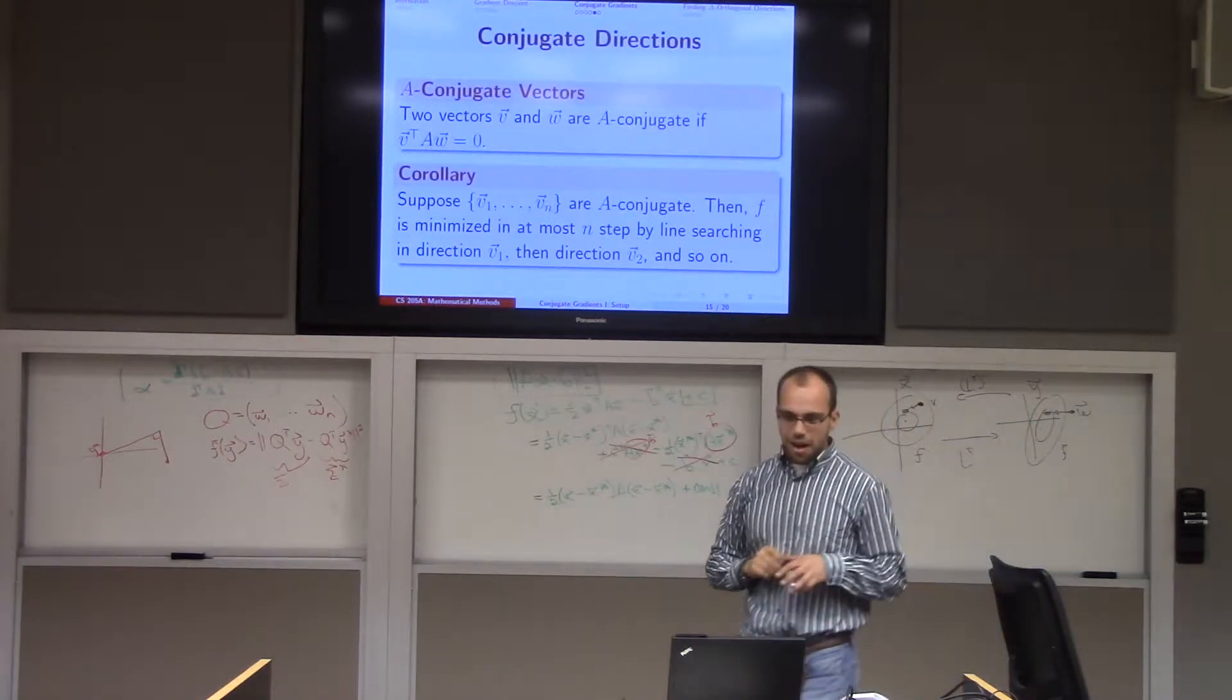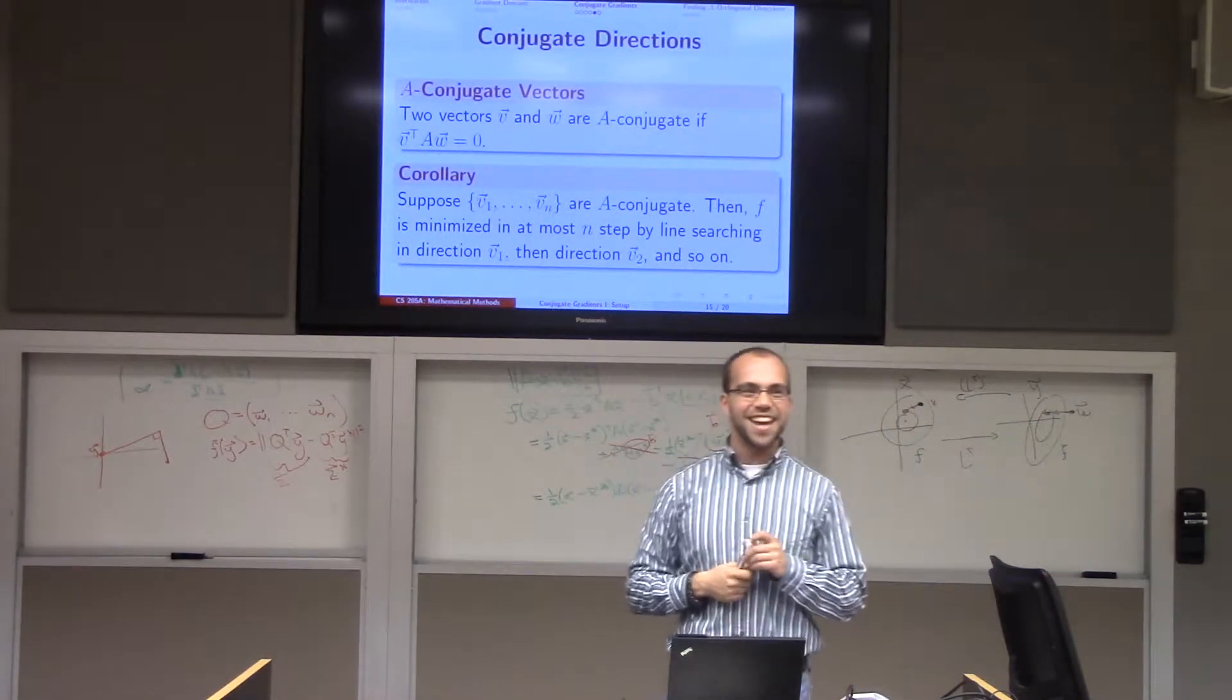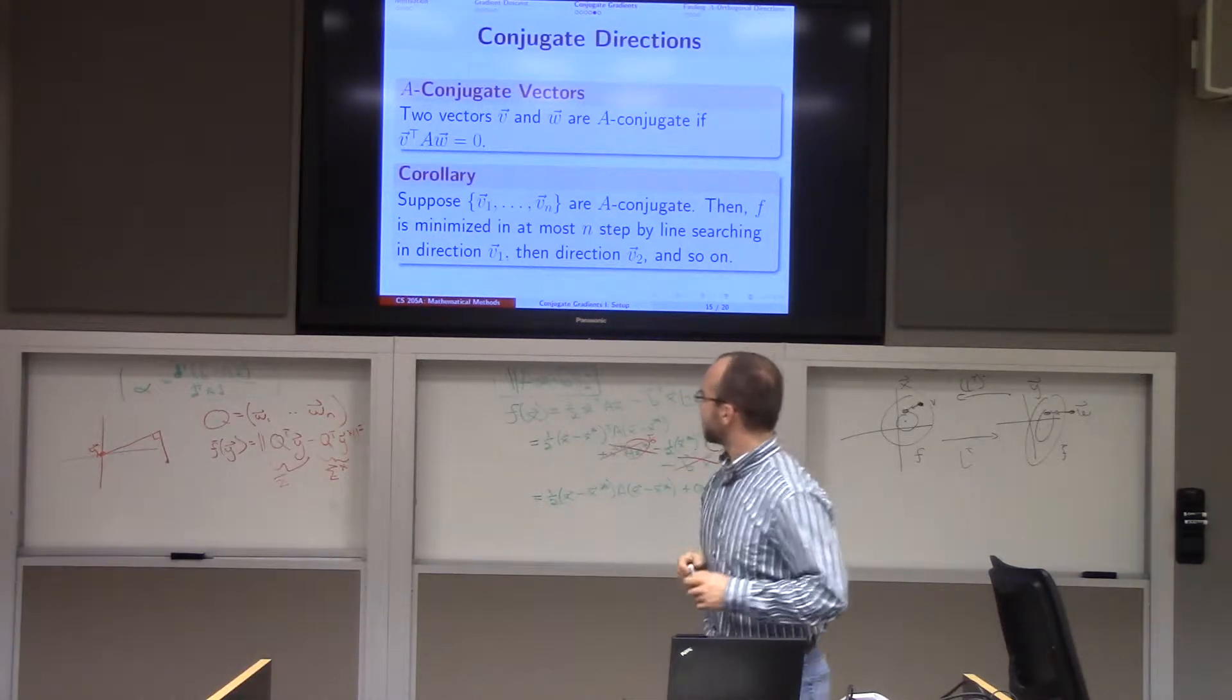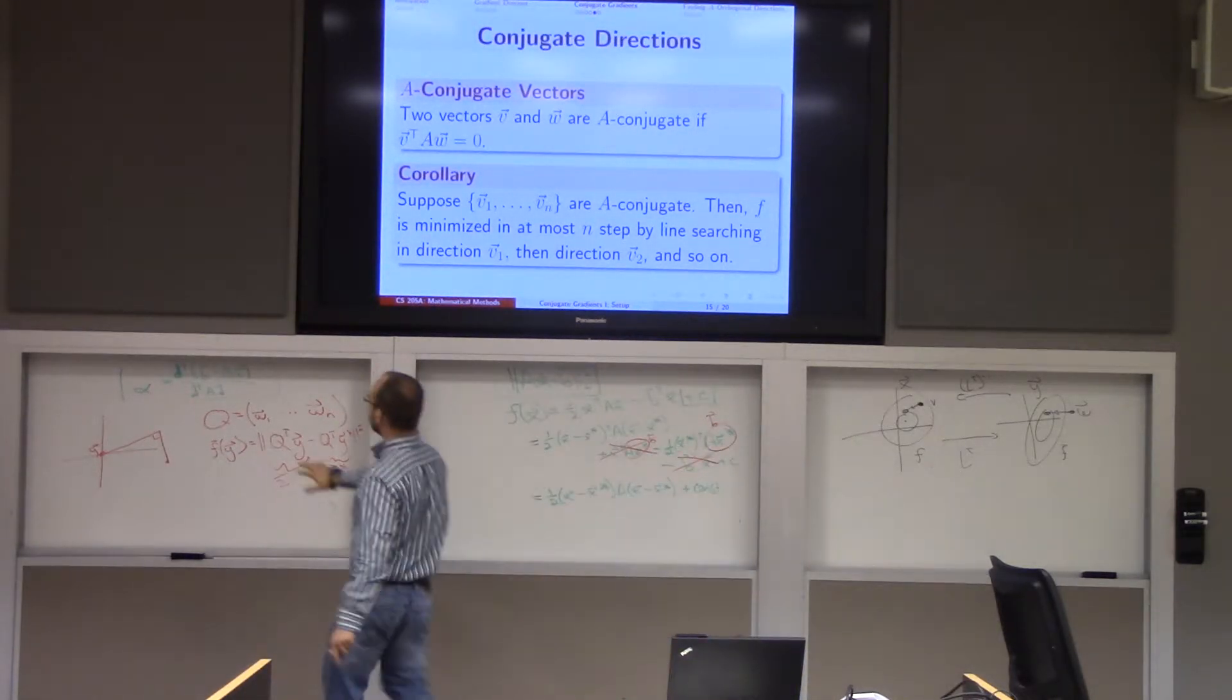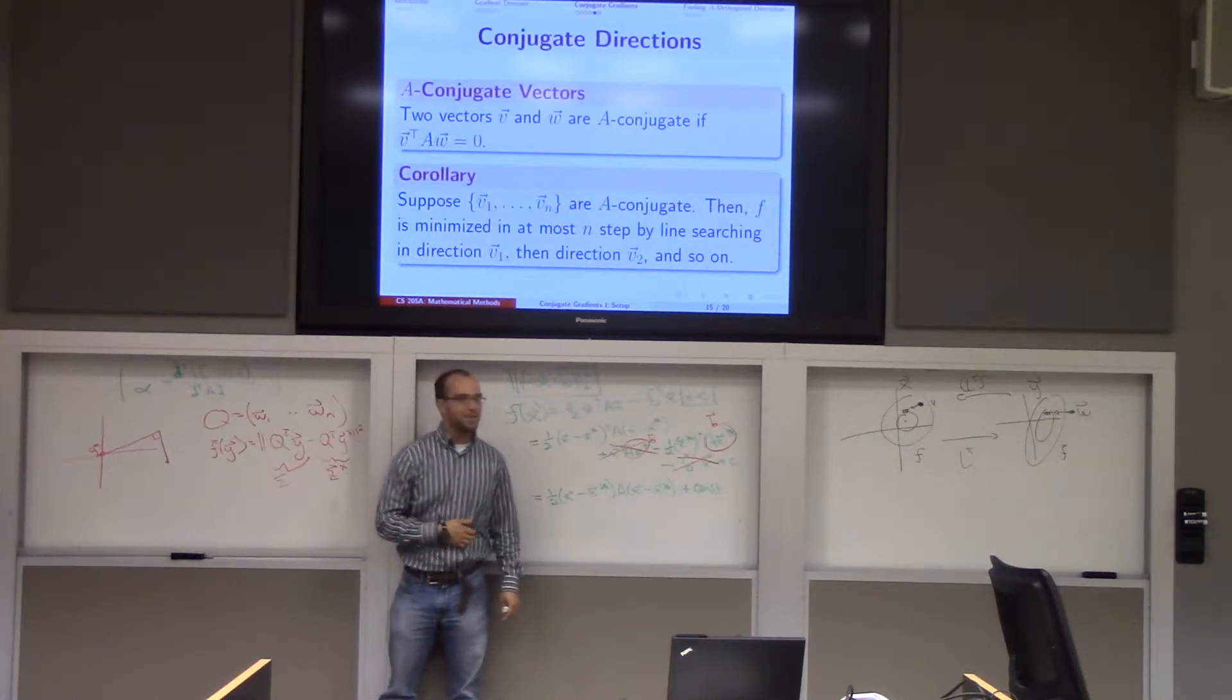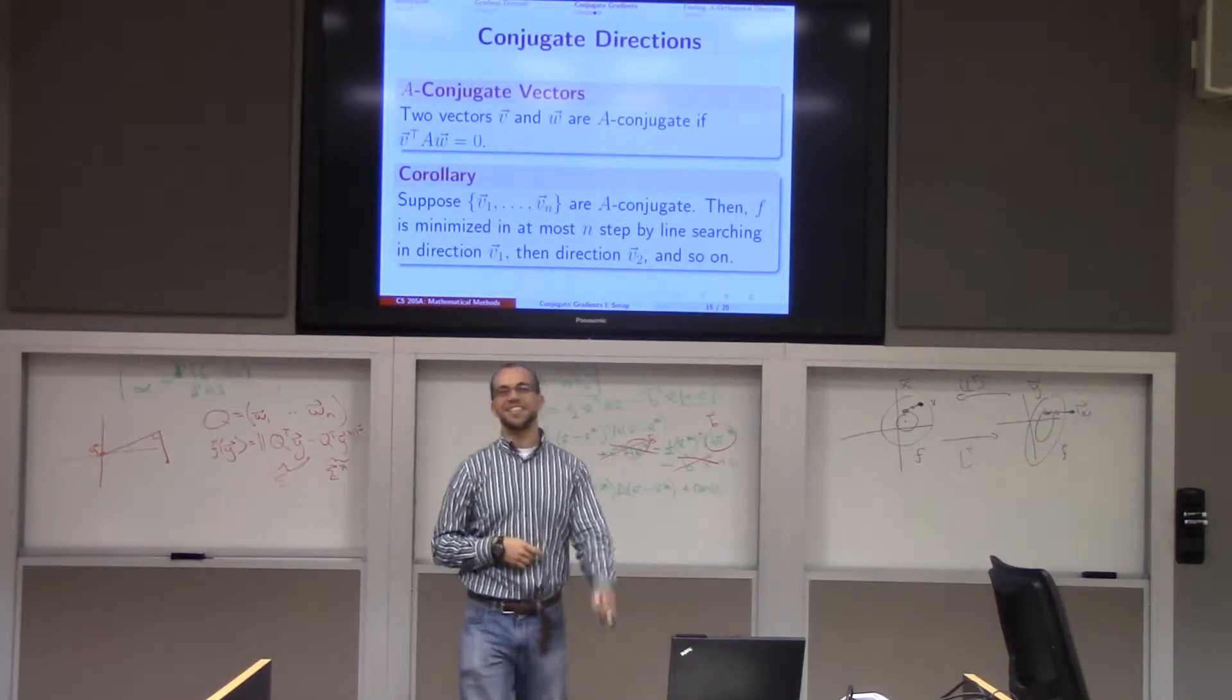So what is our job now? Our job is to find the n A-conjugate directions. Because the second we do, we have that nice line search formula for alpha, and we just apply it n times when we solve our system, without ever having to apply Gaussian elimination or anything else.